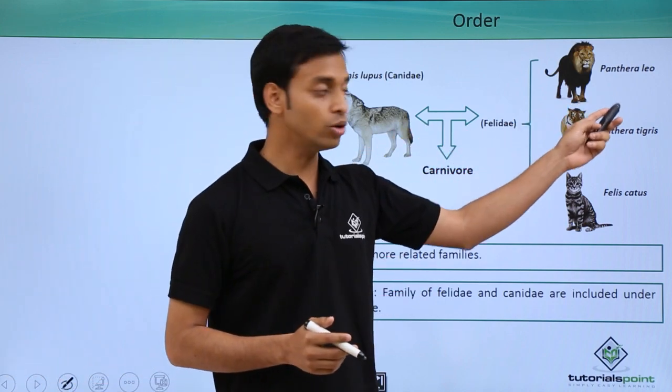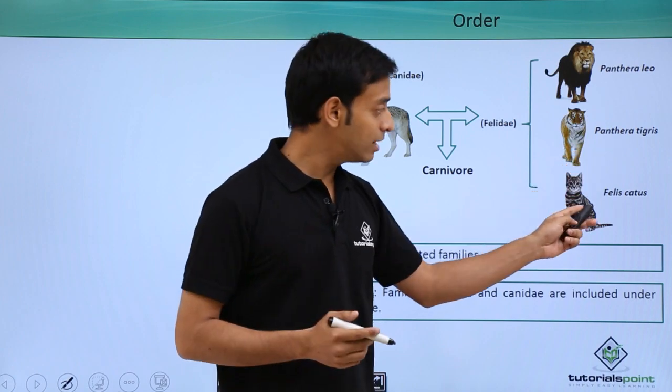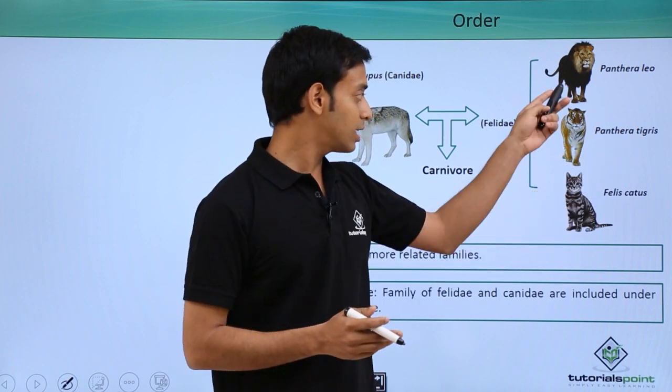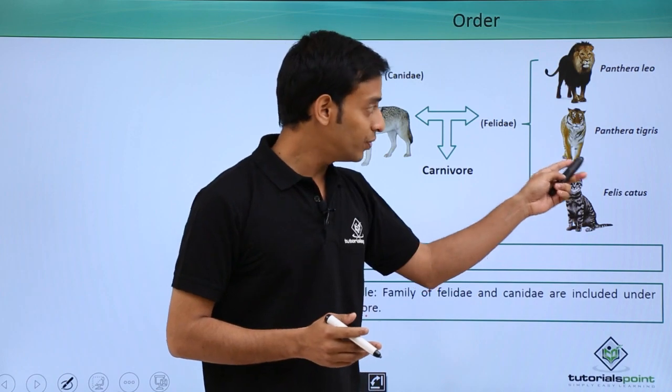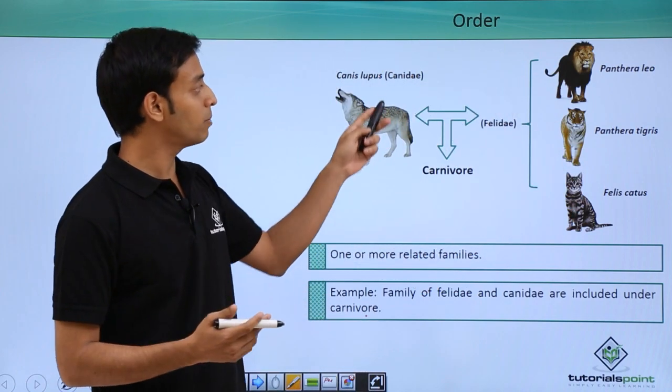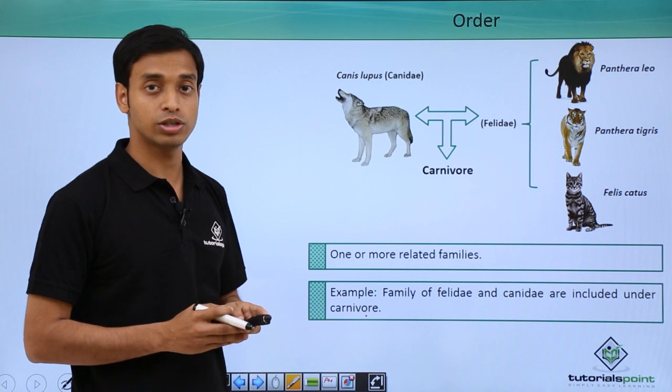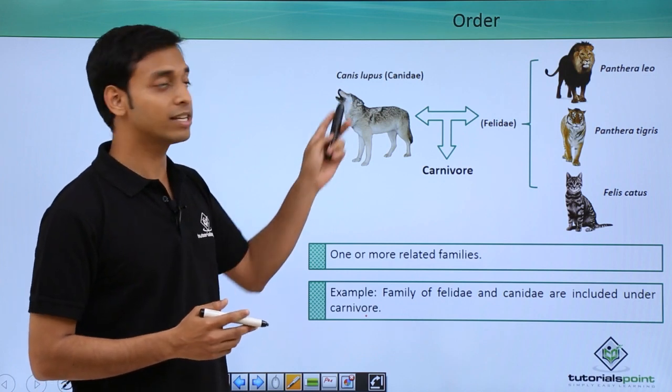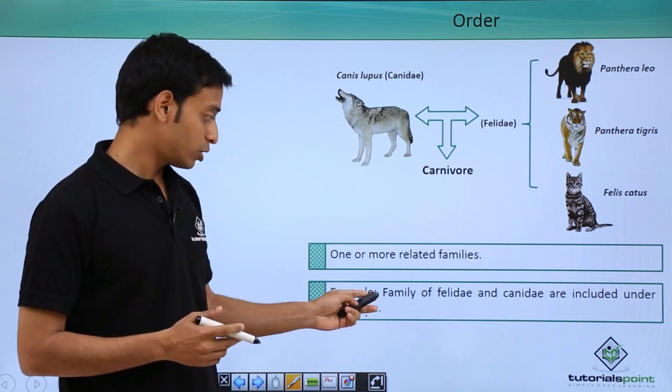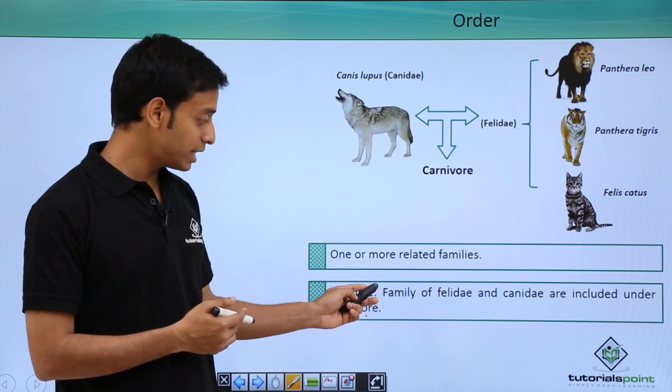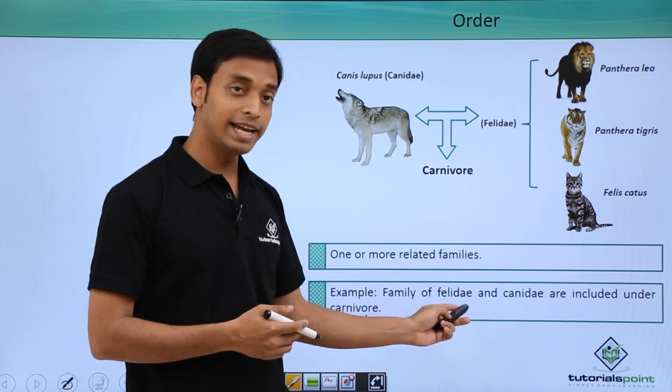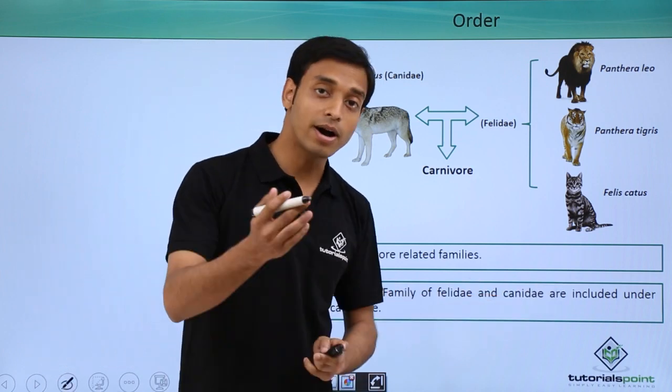We have already talked about Panthera leo, Panthera tigris, and Felis catus. These are a particular family. They have resemblance with a different family which is Canidae, which involves mostly wolves. Here you can see it's Canis lupus. The family of Felidae and Canidae can come under a similar order which is known as Carnivora.